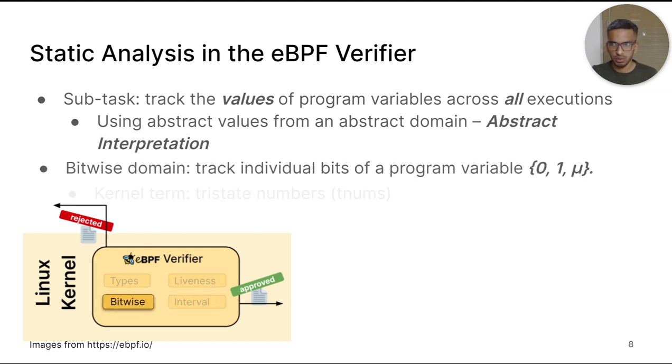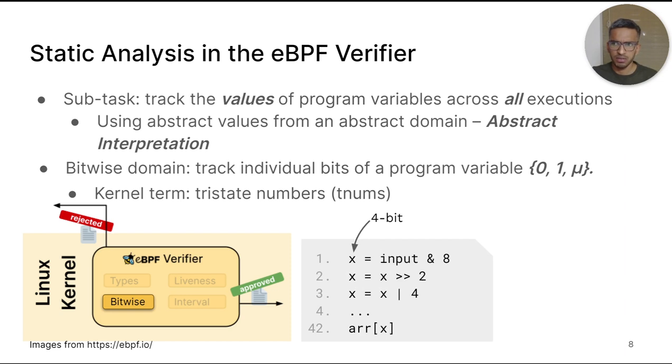The kernel calls this the domain of tri-state numbers because for the purposes of tracking, each bit in a program variable can either be known to be 0, known to be 1, or unknown, denoted here as mu. Let's look at variables as if they had only 4 bits. Suppose we want to track the individual bits of a 4-bit variable x in this eBPF program snippet. TNUM x can be used to track x. Initially, we don't know anything about x, so all of TNUM x is set to unknown.